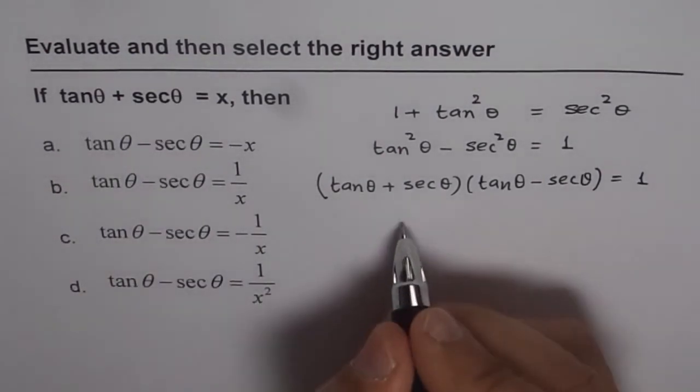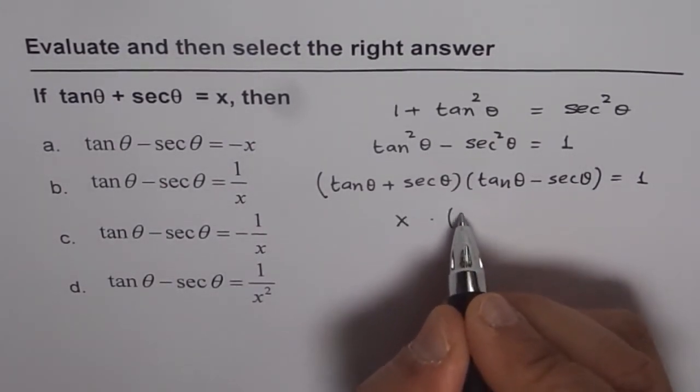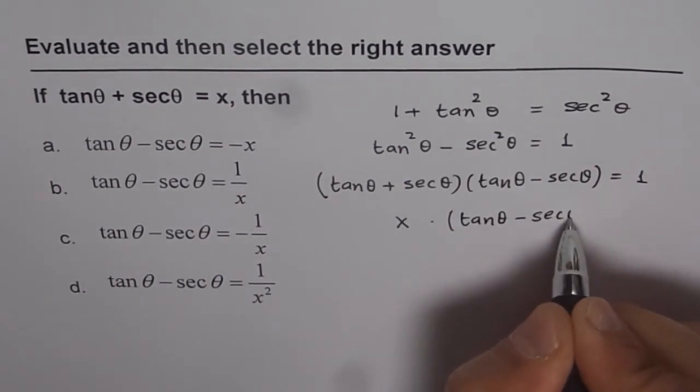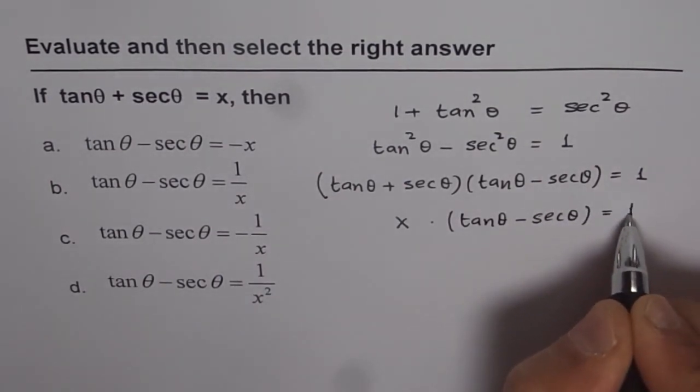So we can now write that x times tan theta minus secant theta equals to 1.